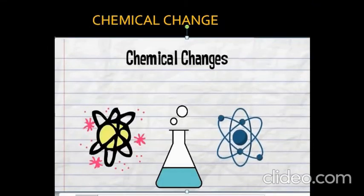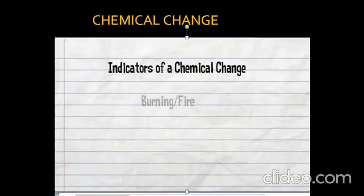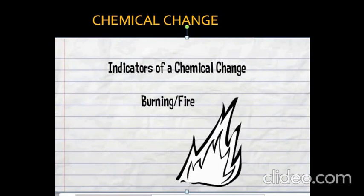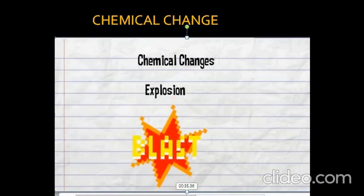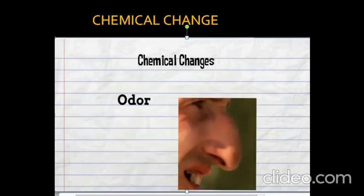Chemical changes, on the other hand, create new substances and involve the breaking or making of chemical bonds. There are a few indicators of a chemical change: first, if there is burning or fire, you have a chemical change. Second, a temperature change without heating or cooling is a chemical change. Third, an explosion is also a chemical change. A change in color is also a chemical change, and a change in odor is also a chemical change.